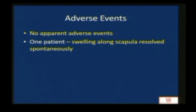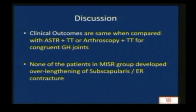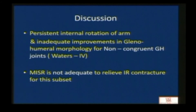In discussion, MISR corrects internal rotation contracture in congruent glenohumeral joint satisfactorily. Passive external rotation improved by 80 degrees at three months and did not reduce at two-year follow-up, so there is no recurrence of contracture. Follow-up MRI shows improvement in glenohumeral joint remodeling, at least in congruent glenohumeral joints. Clinical outcomes are the same when compared with anterior soft tissue and arthroscopic series, but none of the patients in the MISR group developed over-lengthening of subscapularis or external rotation contracture. For non-congruent glenohumeral joint, MISR is not adequate and capsular ligamentous structures must be addressed separately.